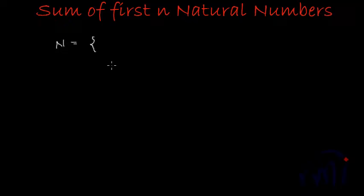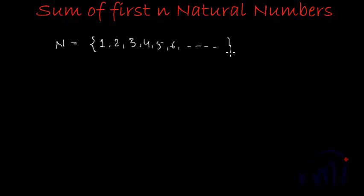Hi, so today we are going to derive the formula to find the sum of first n natural numbers. Natural numbers are represented as capital N and they start from 1, and after that every next number is one more than the previous number. So it will be 2, 3, 4, 5, 6 and so on. This is the set of natural numbers.